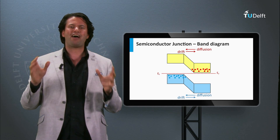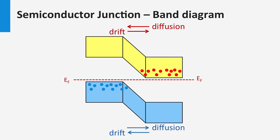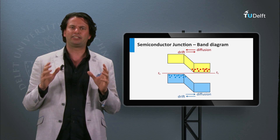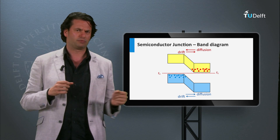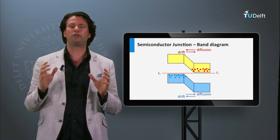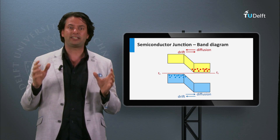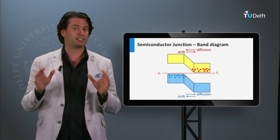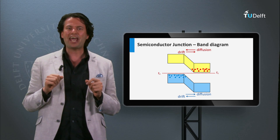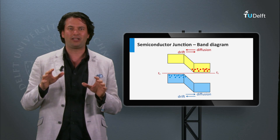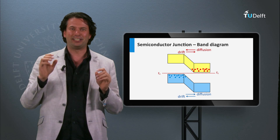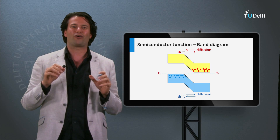Now we have discussed a p-n junction in thermal equilibrium in the dark, in which diffusion and drift are in balance. However, we can manipulate this equilibrium by first applying a bias voltage over the p-n junction, and secondly by illuminating the p-n junction to increase the minority charge carrier density — in that case we have created a solar cell. The working principle of the solar cell will be revealed in detail in the next, final block of this week.